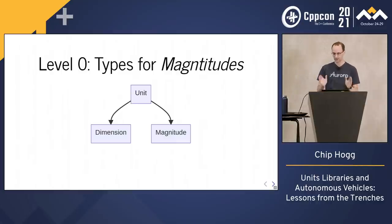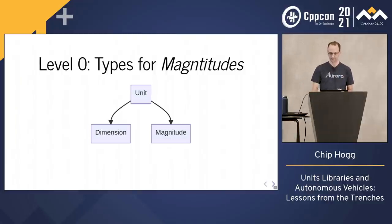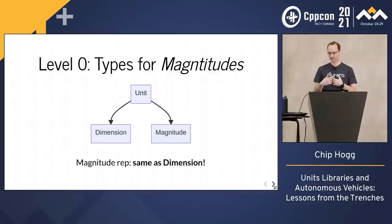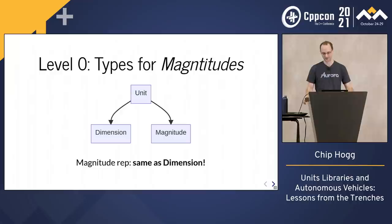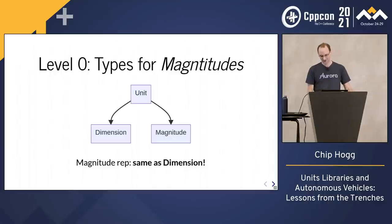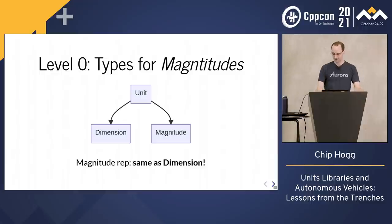That was dimension. We also need a representation for the other half of our unit, which is magnitude. People often use a ratio here, but surprisingly, we actually use the same representation — just instead of basis dimensions like length and time, we have basis numbers. It kills me to not have time to talk about this, but if you're curious about how to represent positive real numbers by a vector space over the rationals, let's chat later. Magnitude also has product and powers, and therefore also inverse, quotient, and root.